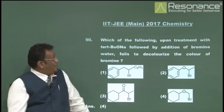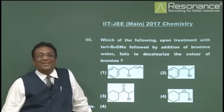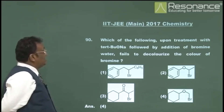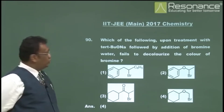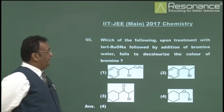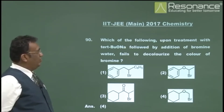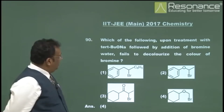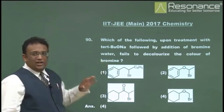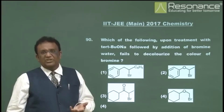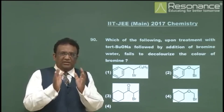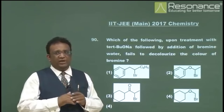Question 90: which of the following, on treatment with sodium tertiary butoxide followed by bromine water, fails to decolorize bromine? Bromine water decolorizes with alkenes — it is a characteristic test of unsaturation. Aromatic compounds are not involved. None of the substrates as given will decolorize bromine water; the reaction with tertiary butoxide must produce an alkene for decolorization to occur.